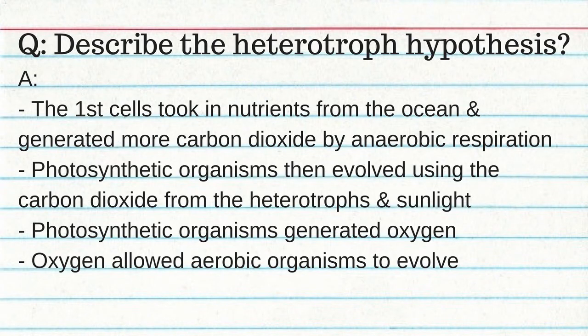Modern scientists study the history of life on Earth using laboratory simulations, fossils, radioactive dating, geologic patterns, and biochemical analysis. The first cells were anaerobic heterotrophs that consumed biomolecules since there was no oxygen. The heterotroph hypothesis: the first cells took nutrients from the ocean and generated CO2 by anaerobic respiration; photosynthetic organisms evolved, creating oxygen from CO2 and sunlight; oxygen then allowed aerobic organisms to evolve.